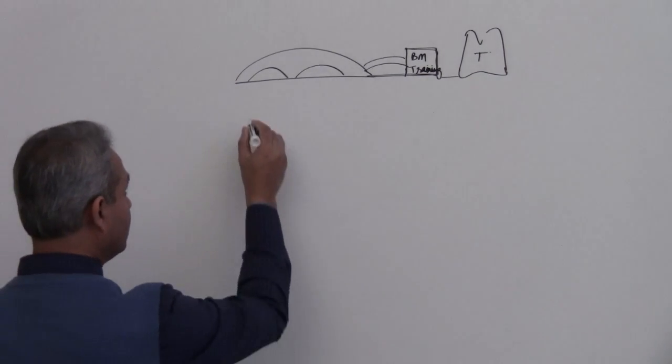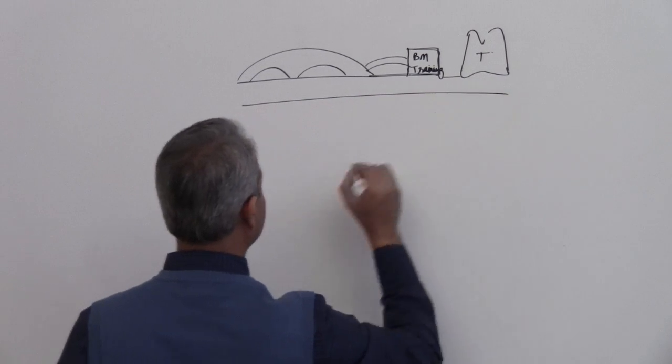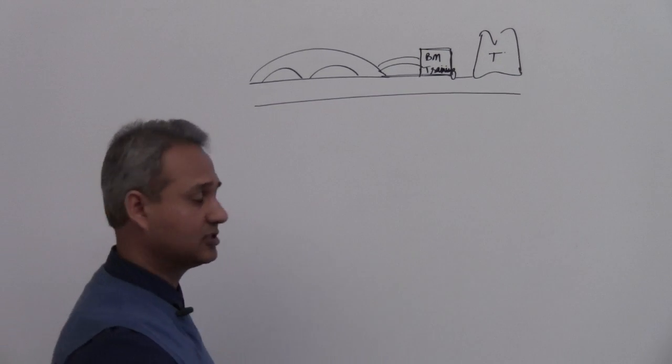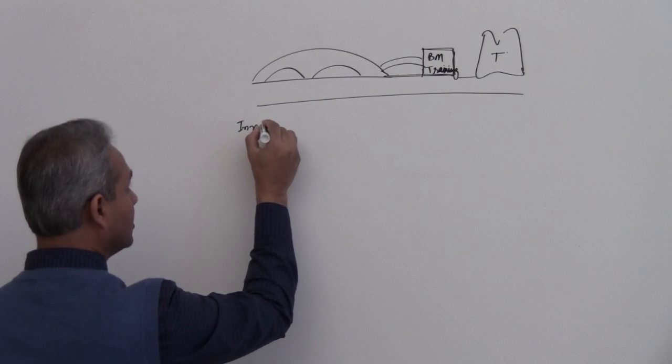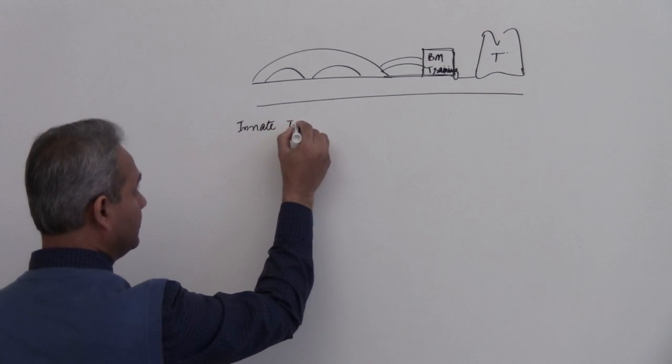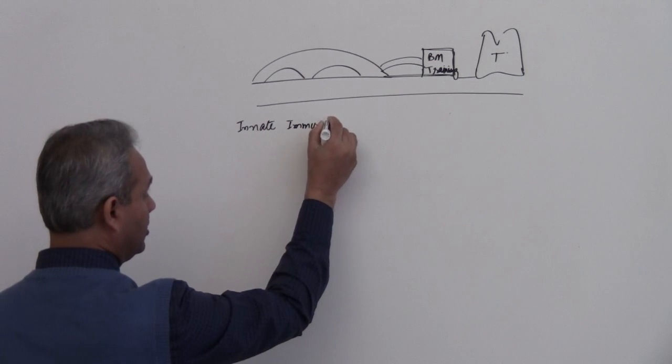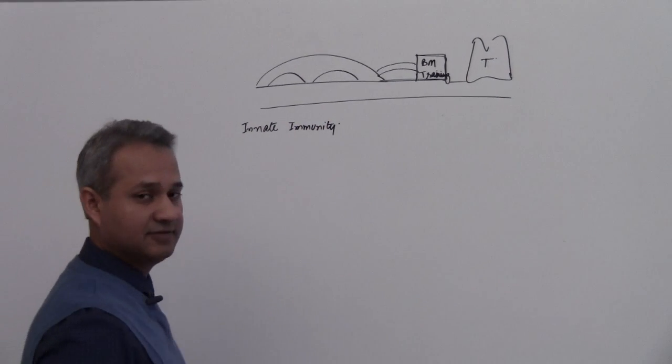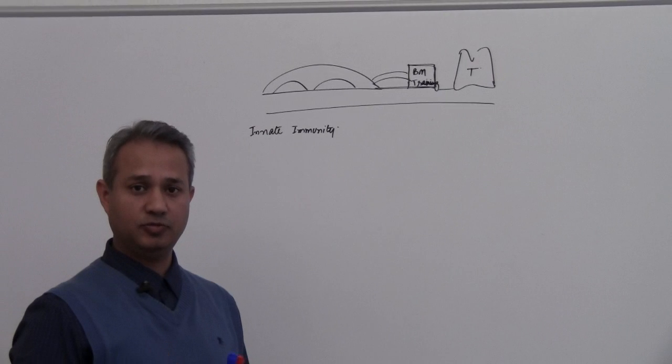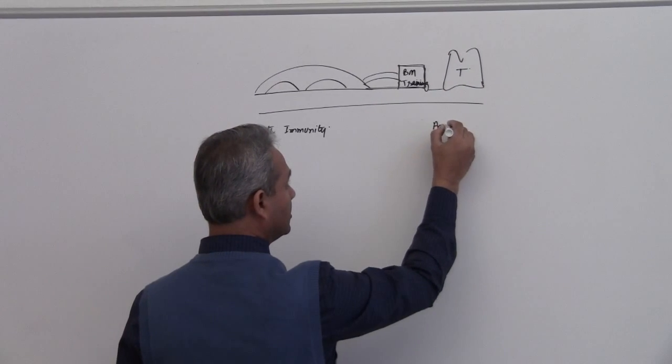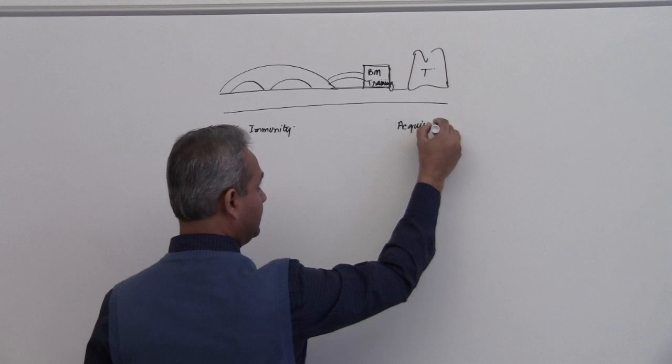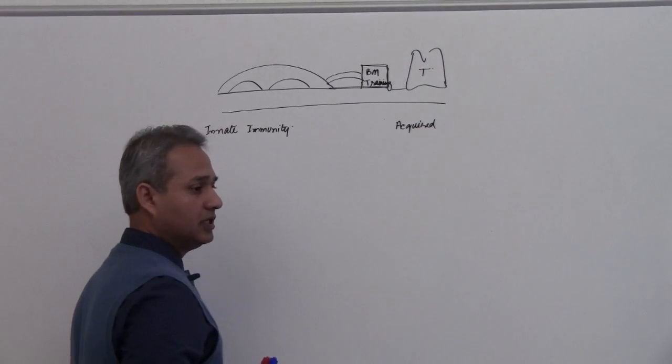But the thing which I want to talk about is that we talked about last time as well. In our last lecture we have innate immunity or non-specific generalized immunity or defense mechanism, and we have acquired immunity or generalized, not generalized but specialized and targeted defense mechanism.